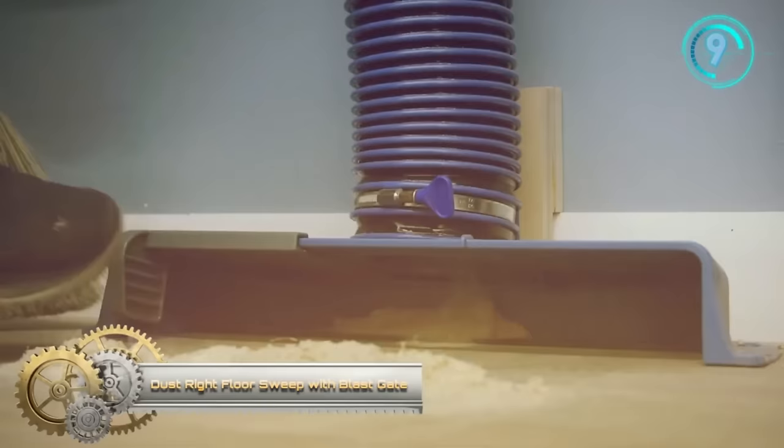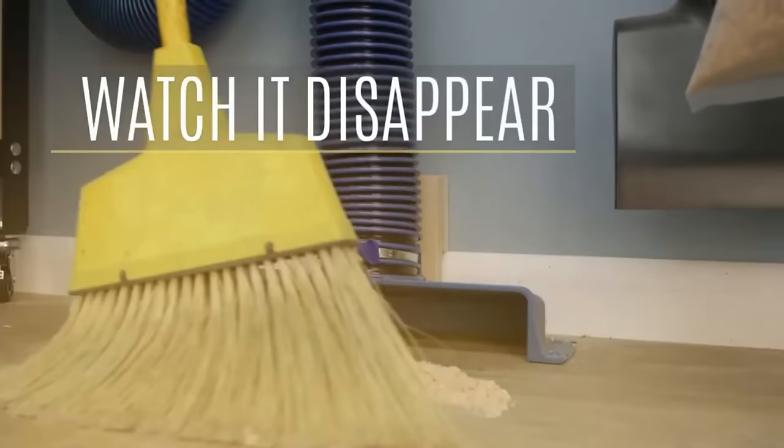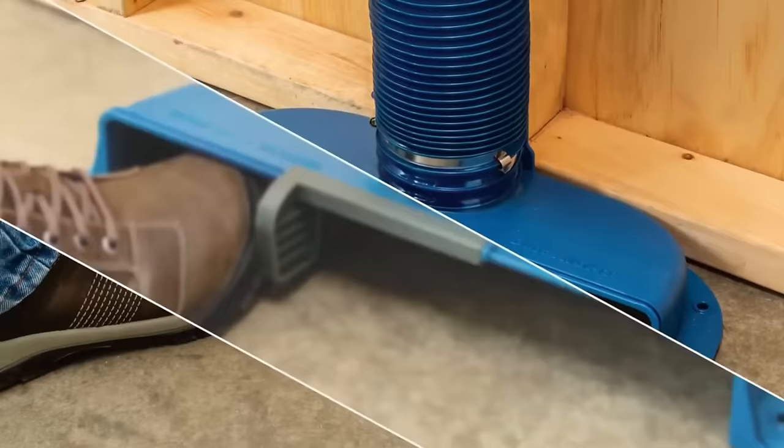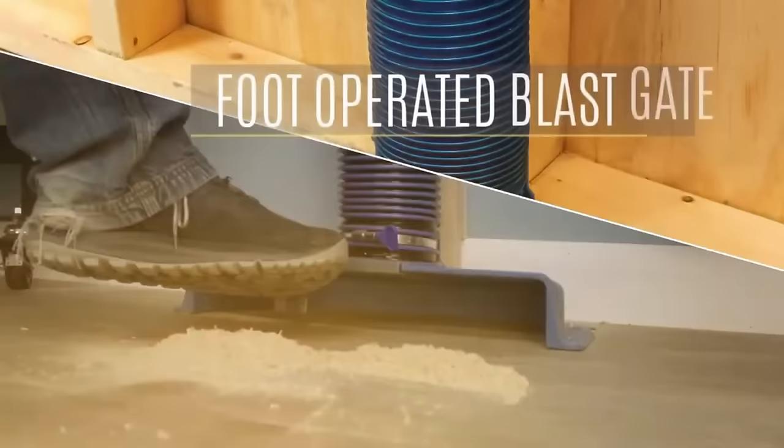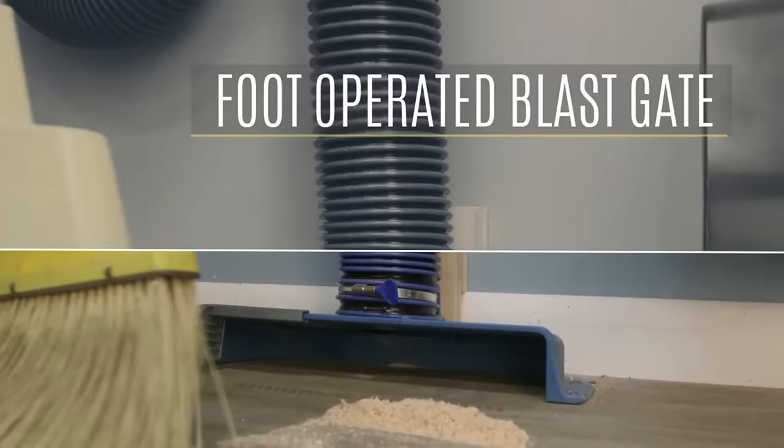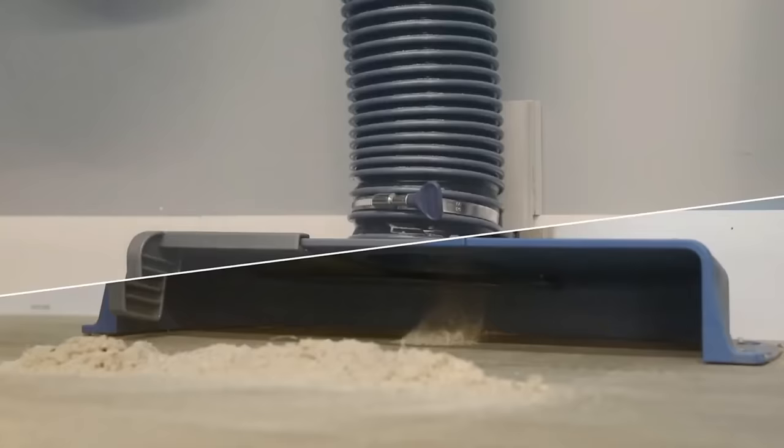Dust Right Floor Sweep with Blast Gate. This Dust Right Floor Sweep is a specialized dust collection port that captures any dust and debris that you sweep into it with a broom, eliminating the need for a shop dustpan. It incorporates a foot-activated blast gate so you can easily open it for use, then close it to maximize suction elsewhere in your shop. Mount it to the floor or the bottom of a wall with the pre-drilled mounting holes.